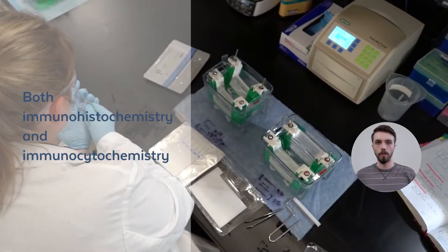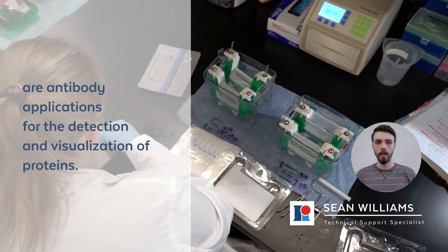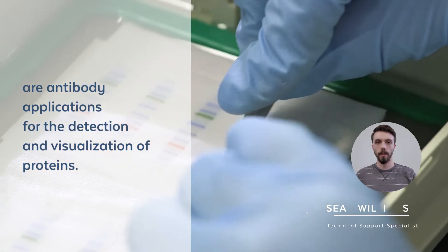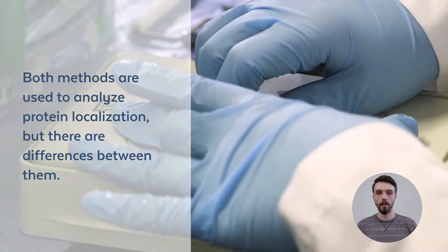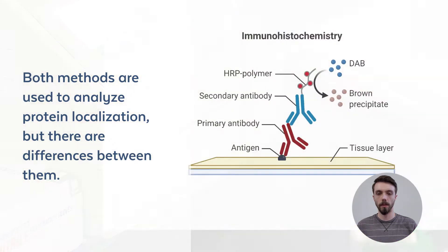Both immunohistochemistry and immunocytochemistry are antibody applications for the detection and visualization of proteins. Both methods are used to analyze protein localization, but there are differences between them.